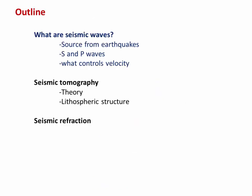So in this video, we're going to first try and understand what seismic waves are. We'll show that they're generated from earthquakes, there are multiple types of waves, and that the velocity of those waves is actually controlled by typically the composition or the density of the rocks the waves pass through. Then we'll switch gears and look at seismic tomography, which is the way we can essentially model the seismic velocity structure of Earth's interior and help understand what it's made of. And we'll finish the video with a technique called seismic refraction, where we use reflections of seismic waves to also look at compositional boundaries within Earth.